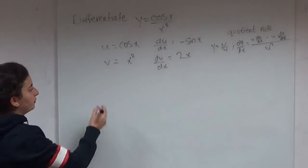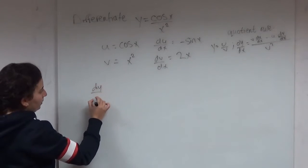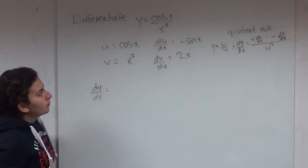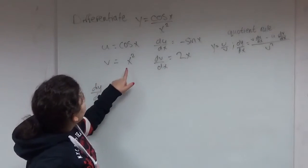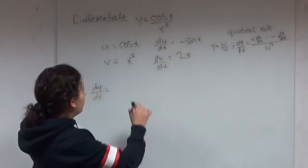So now we're ready to differentiate. v times du over dx, that's x squared times minus sine x.